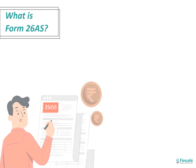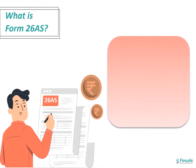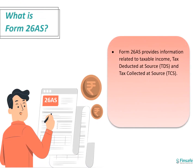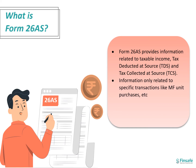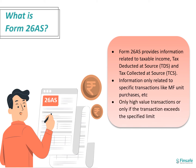Form 26AS basically provides information related to taxable income, tax deducted at source, and tax collected at source. The information is related to specific transactions like mutual fund unit purchases, etc. Only high-value transactions, or transactions that exceed a specific limit, are included in this statement.